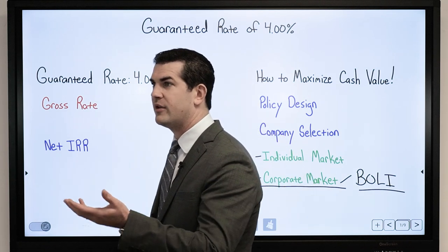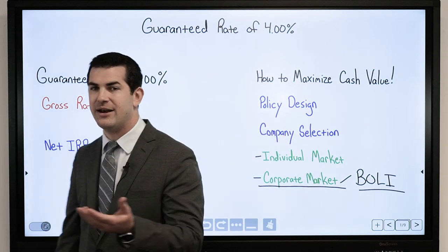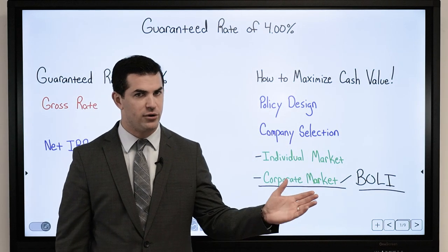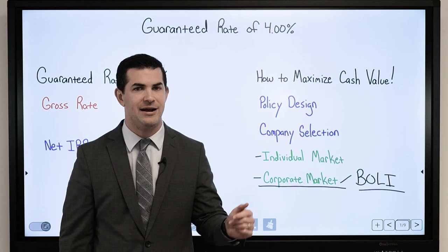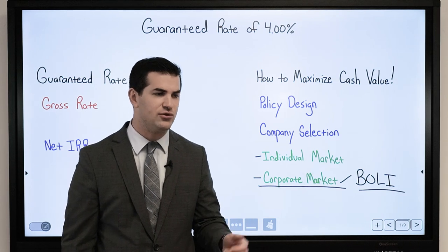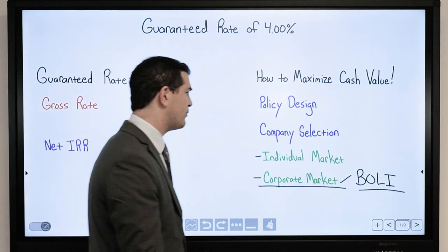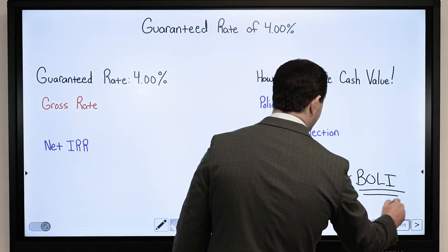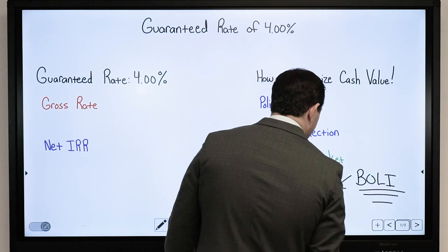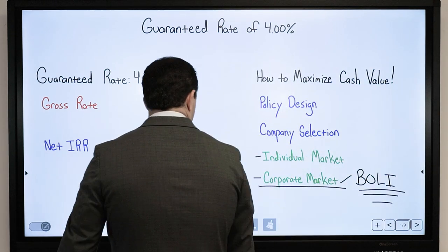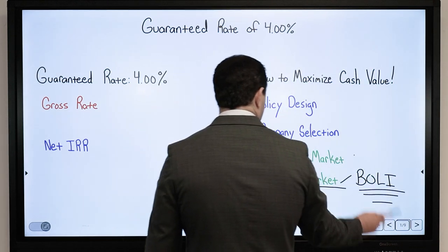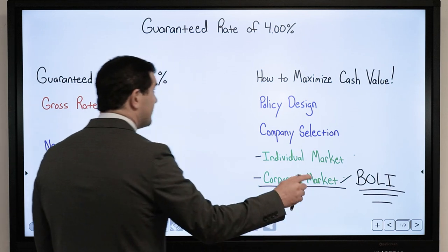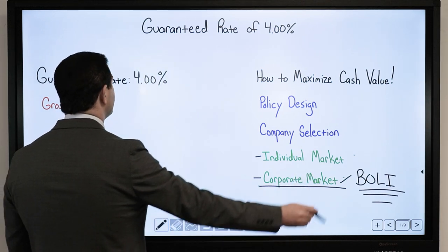It's interesting — when you look at the net internal rate of return, often the company with the stronger guarantee was also producing the stronger net IRR on both guaranteed and non-guaranteed values. But that's on the corporate market and can be consistent with BOLI and individual products used for corporations as well. Let's take a look at some examples.